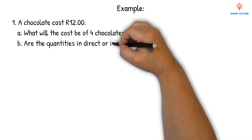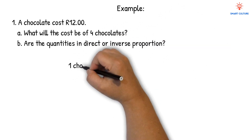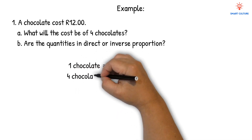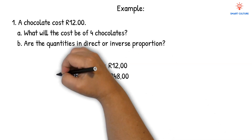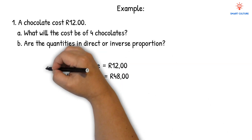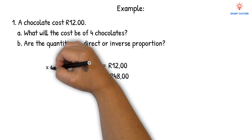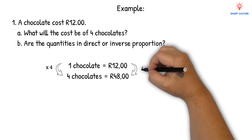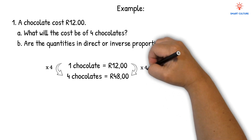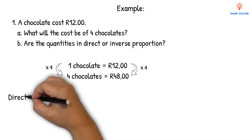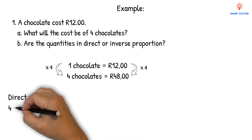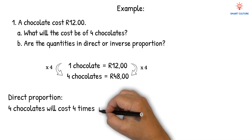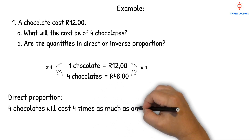And B: Are the quantities in direct or inverse proportion? So we can say if 1 chocolate costs 12 Rand, then 4 chocolates will be 48 Rand. Because on the left hand side, from 1 chocolate to 4 chocolates we've multiplied by 4. In the same way, on the right hand side, we can multiply the 12 Rand by 4 to get 48 Rand. It will be direct proportion, because the 4 chocolates will cost 4 times as much as 1 chocolate — so it's the same for both sides.